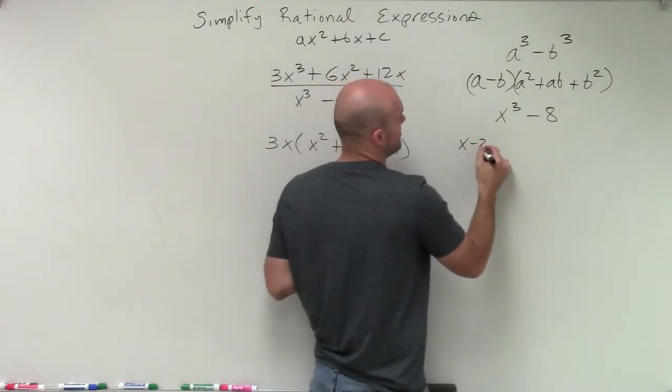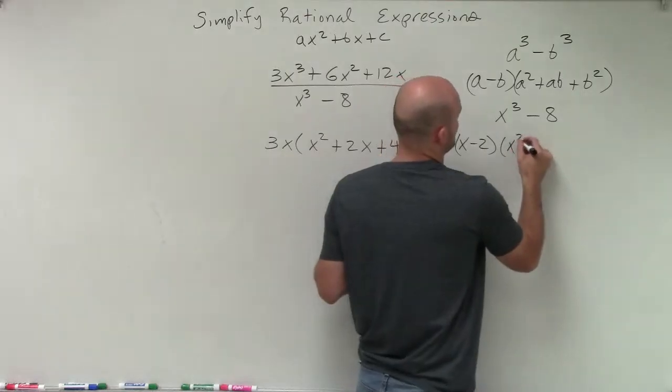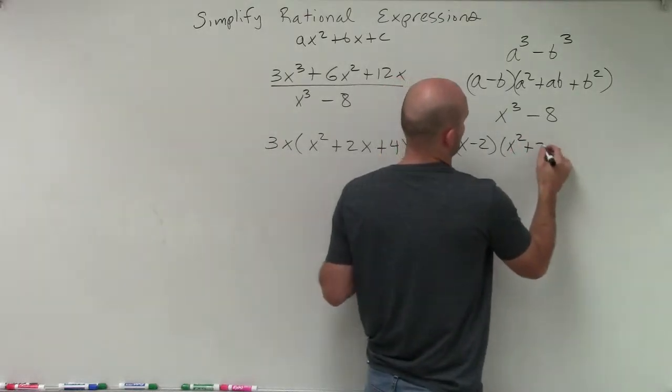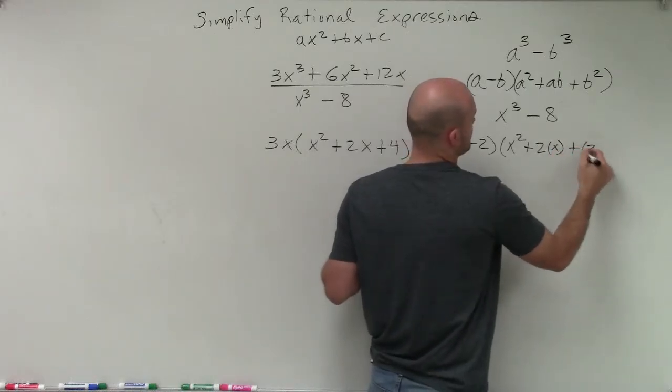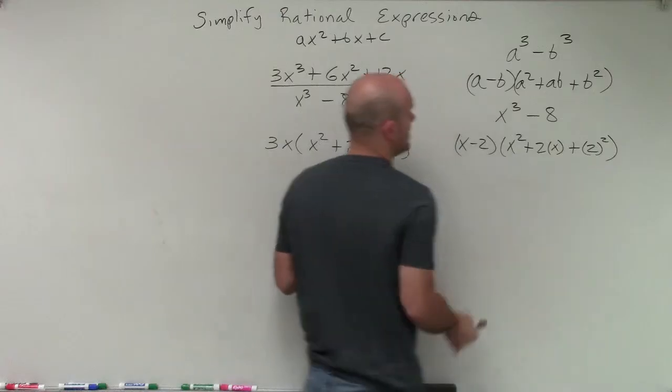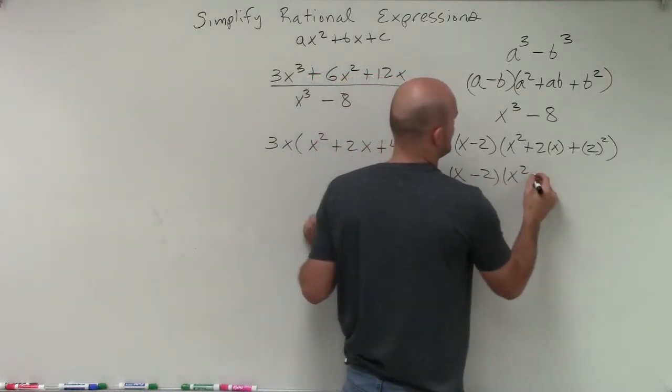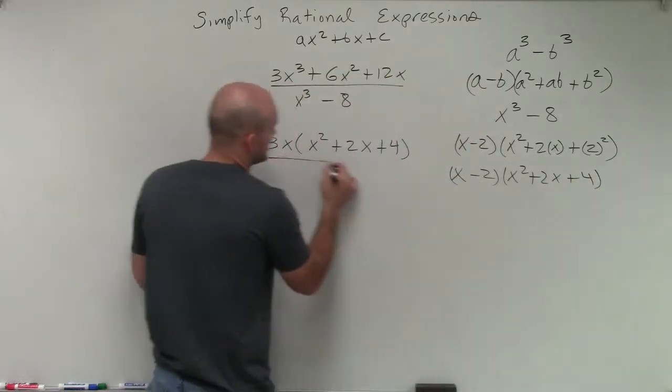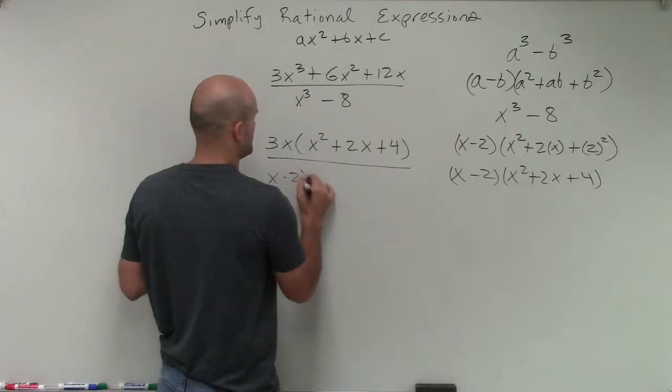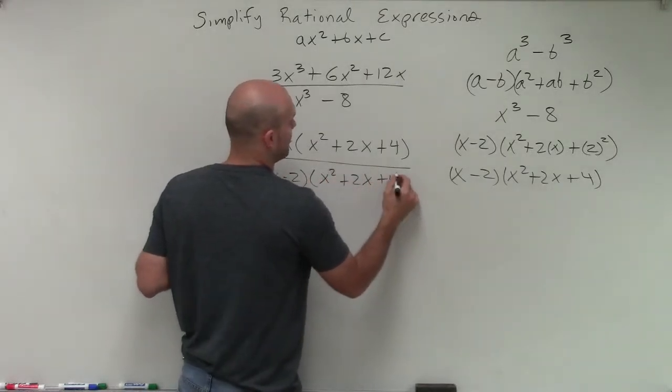So I can have this as x minus 2 times x squared plus 2 times x plus 2 squared. All right, now I can simplify that into x minus 2 times x squared plus 2x plus 4. So let's now write that in our denominator. So we'll have x minus 2 times x squared plus 2x plus 4.